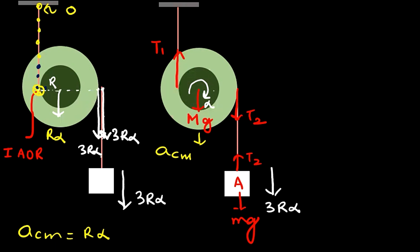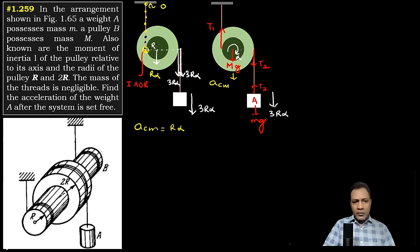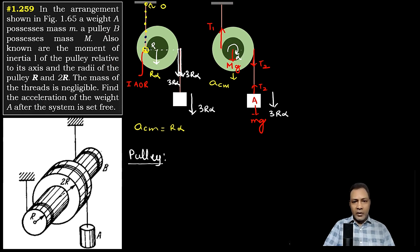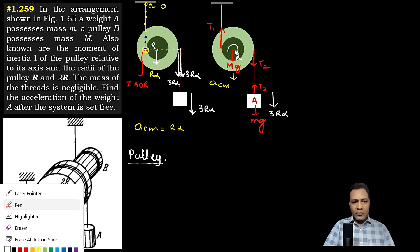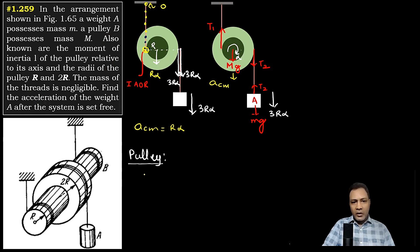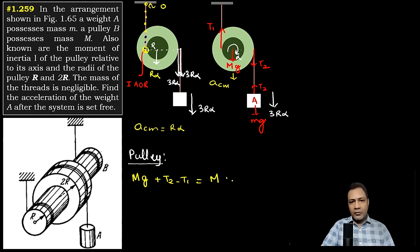Now applying the dynamics equations. For the pulley, applying F_external = M·a_cm in the downward direction: the forces are weight Mg, plus T2, minus T1, which equals M·r·alpha. This is the first equation.